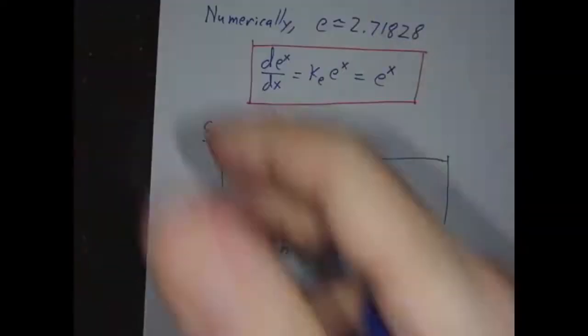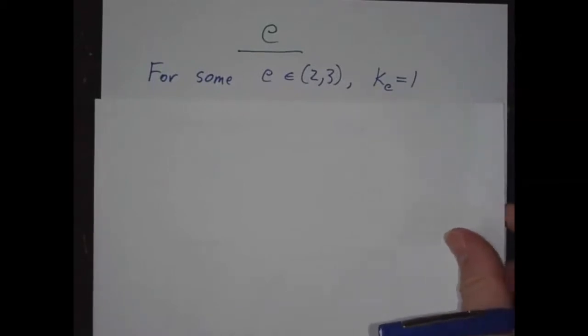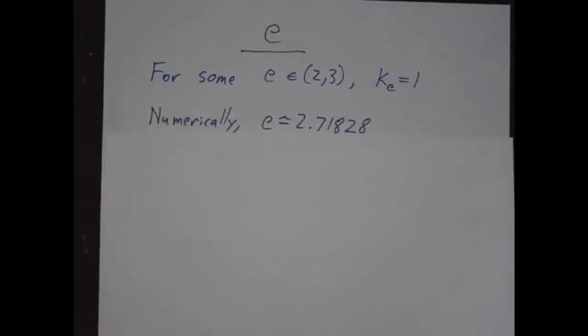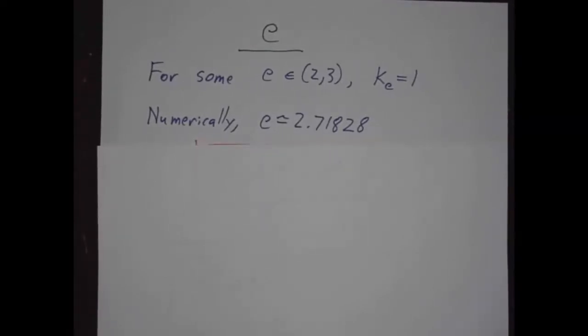We call this number e. e is, by definition, the number whose constant is 1. It turns out to be around 2.71828. But we'll just think of it as e.